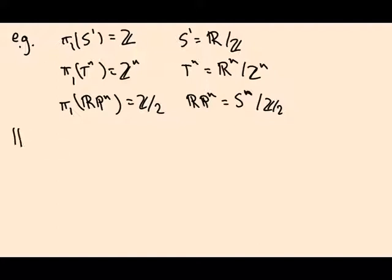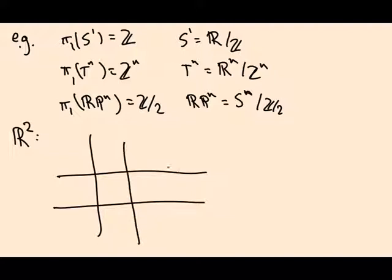Let's maybe just do one more example. Let's take R² and divide it up into squares like this. And I want to make a group action such that when I take the quotient, I get basically the square with these sides identified in this way. So the top and bottom are identified with arrows going the same way. The left and right hand side have the arrows switched.